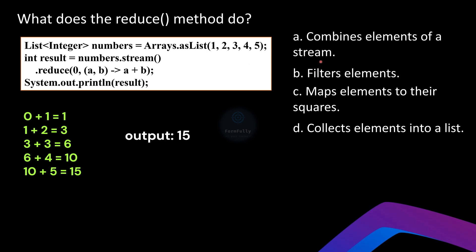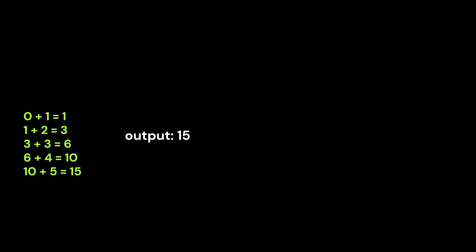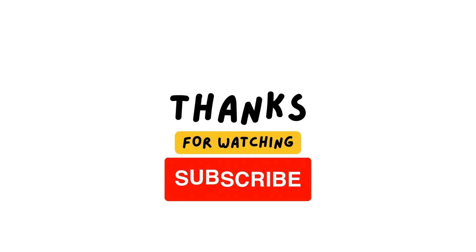After going through all the elements, the result of the reduction is 15, which gets printed. Now let's understand the choices. Option A — 'combines elements of the stream' — is correct because `reduce` is used to combine or reduce the elements of the stream into a single result using the provided accumulator function. Option B — 'filters elements' — is incorrect. Option C — 'maps elements to their squares' — describes what `map` would do. Option D — 'collects elements into a list' — is incorrect; to collect into a list we would use `collect`. So option A is correct.